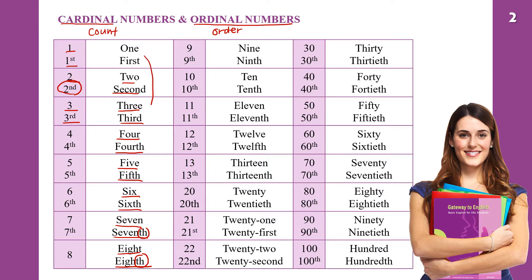Except 1st, 2nd, and 3rd, the rest of the numbers have TH. So look at 9th — the cardinal is 9, spelled N-I-N-E.